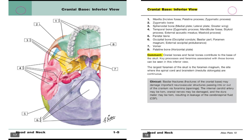In this playlist of Netter's anatomy flashcards, the skull view we will discuss is the inferior view — the cranial base inferior view. This is the skull and you can see it from the inferior side.